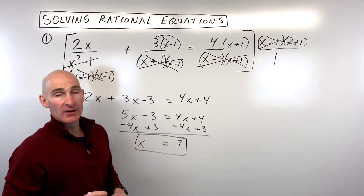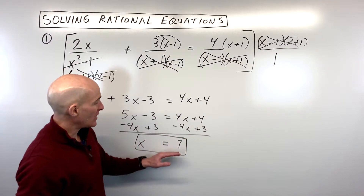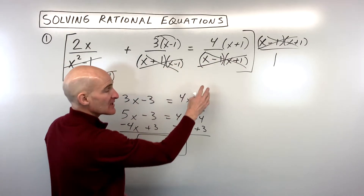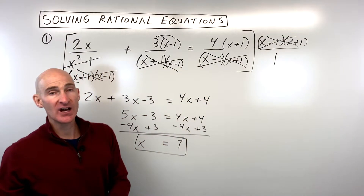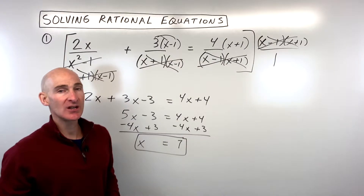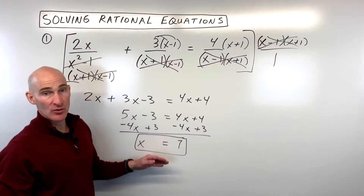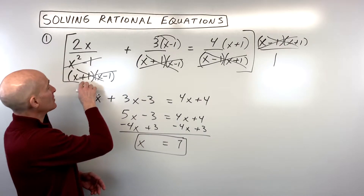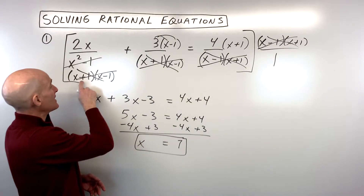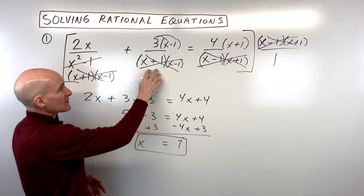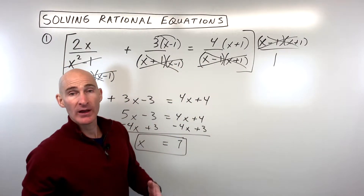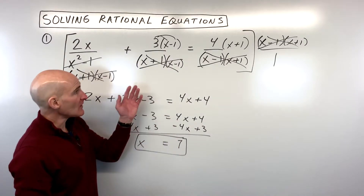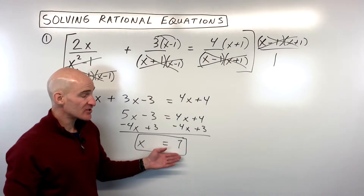Before you call it a day on that problem, you want to take that 7 and go back and look at the denominators to see if it makes any of them equal to 0. If it does, that's called an extraneous solution — it's a false answer, and you would say there's no solution. In this case, we just don't want x to be negative 1 or positive 1, because that would make the factors in the denominator equal to 0. You can't divide by 0 — that's undefined. Here, 7 is not going to make the denominator 0, so this is a good answer.